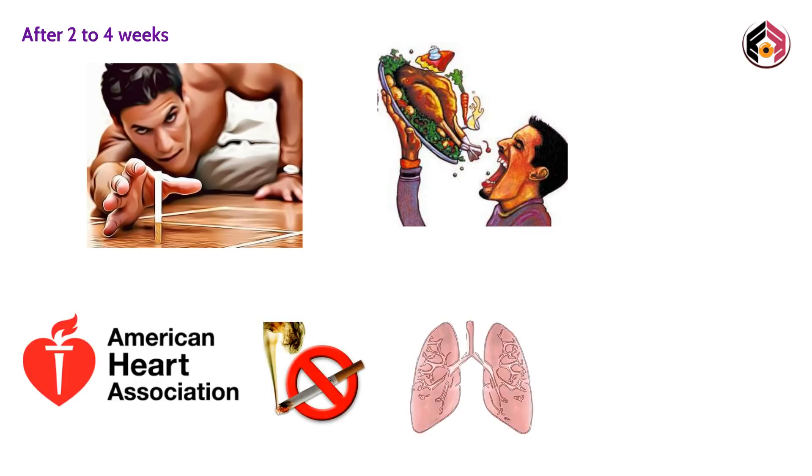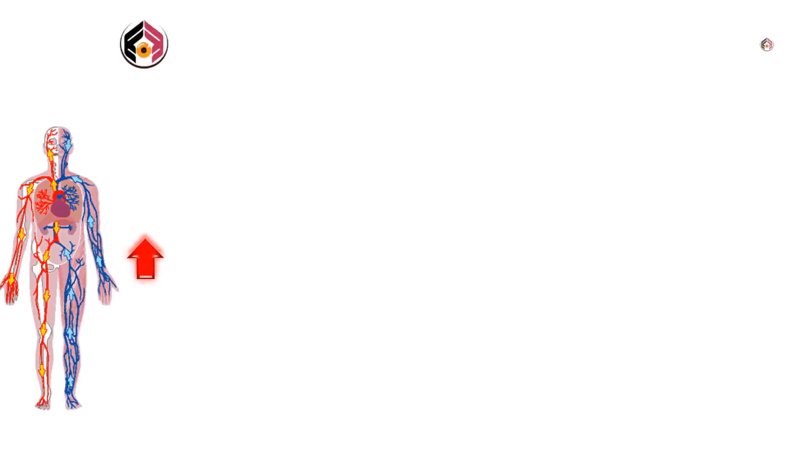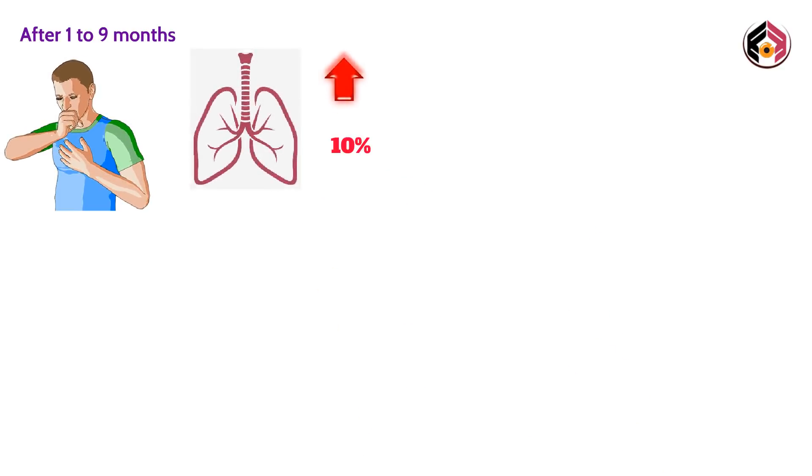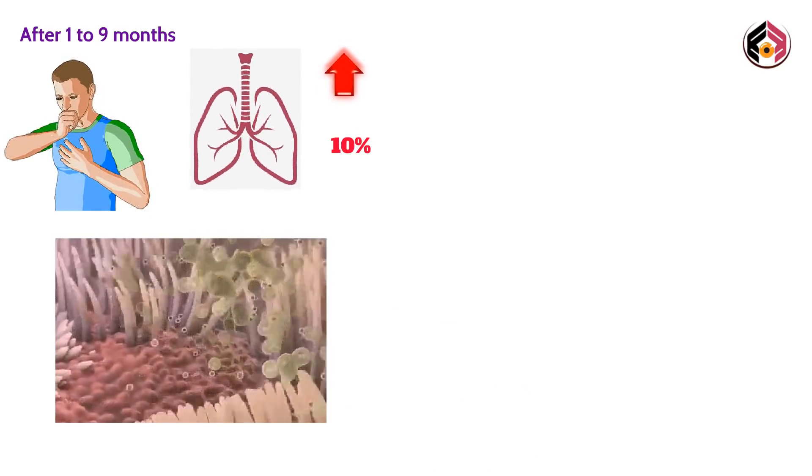Blood circulation also improves. After one to nine months, smokers' lungs dramatically begin to repair themselves. Coughs, wheezing, and breathing problems improve as lung function increases by up to 10%. Damaged hair-like structures called cilia regrow in the lungs, reducing the risk of infections by pushing out mucus, germs, and other gunk from the lungs.